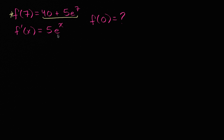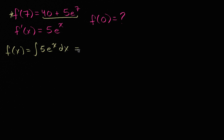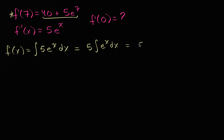If f prime of x is equal to 5e to the x, then f of x is going to be equal to the antiderivative of f prime of x — the antiderivative of 5e to the x dx. I'll take that five out of the integral to make it a bit more obvious. The antiderivative of e to the x is just e to the x, because the derivative of e to the x is e to the x, which I find amazing every time. So this is going to be 5e to the x plus c.